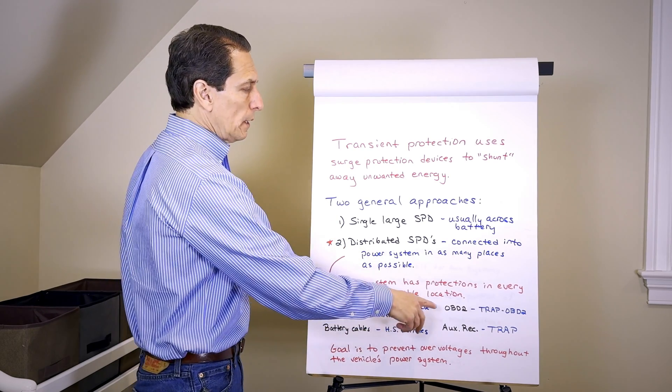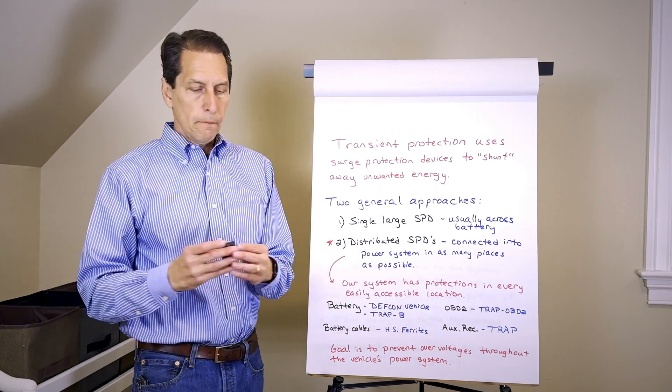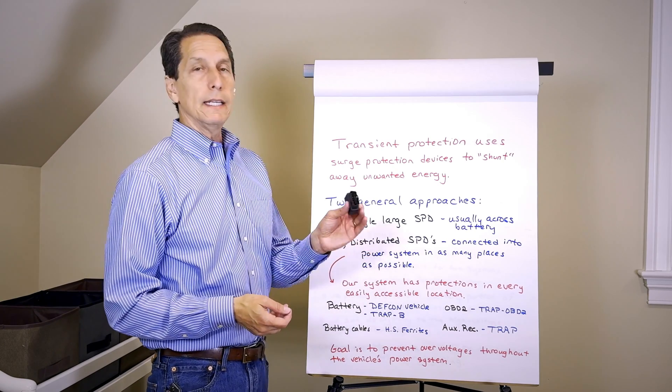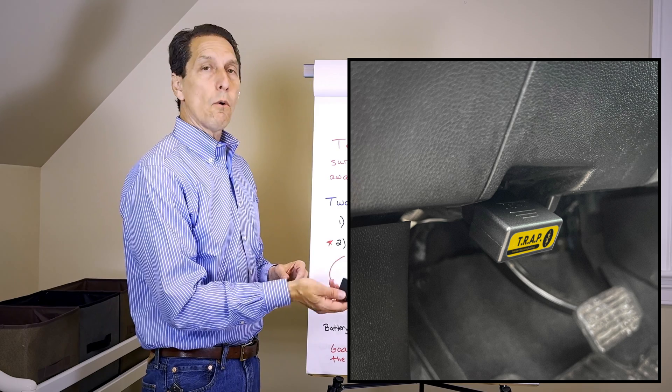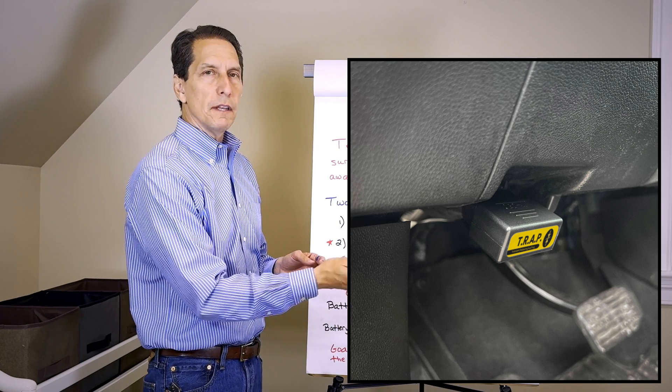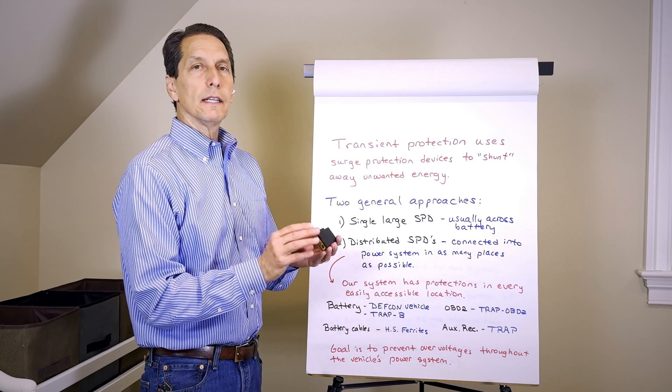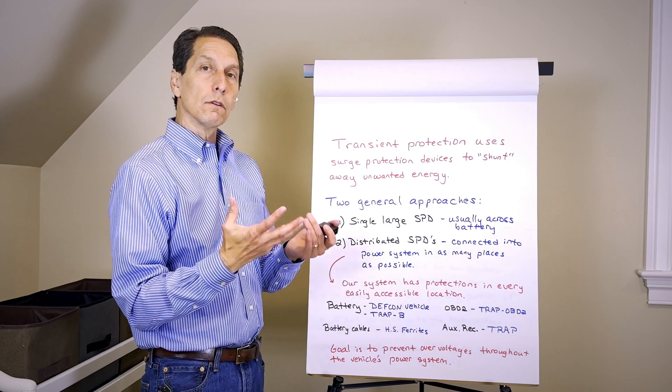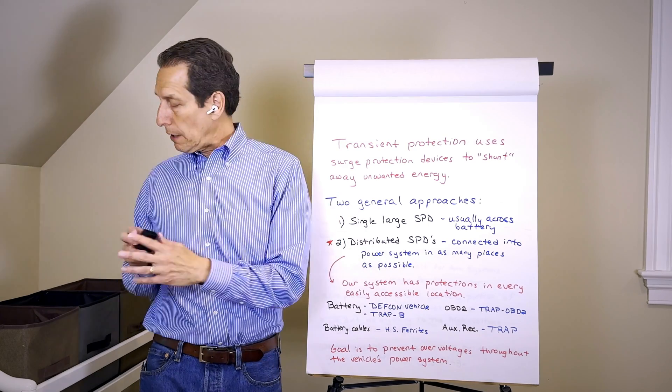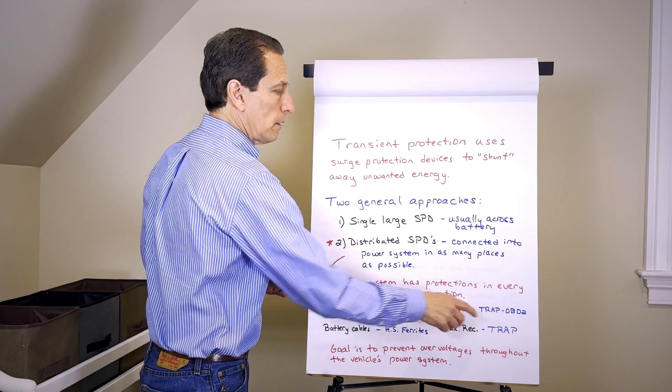We have things that attach across the battery, some things on the main battery cables, and something you can put into the onboard diagnostics port. That's a fairly new product—the Trap OBD2 is what we call it. It just plugs right into your OBD2 port on your vehicle, a lot of times that's under the dash. It press fits on there and is a transient suppression device that tries to drain away energy at that particular location.